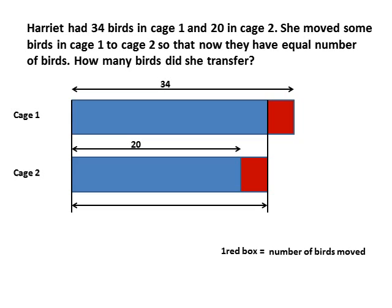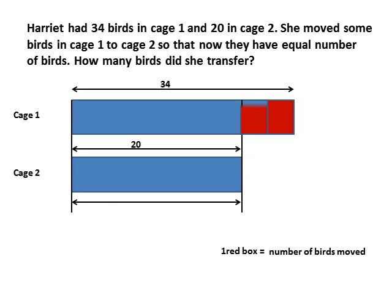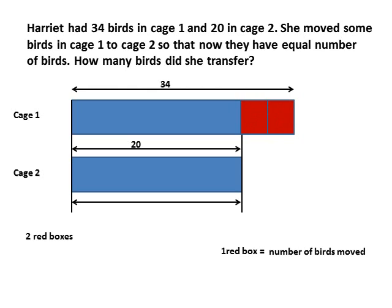Let's go back to the problem. That was your original 20. What if we move back the one red box that we added to cage 2 — let's move it back to cage 1. Now you can see that the two red boxes are basically equal to these two boxes here. It's equal to 34, which was the original number of birds in cage 1, minus 20. So 34 minus 20 equals the two red boxes.